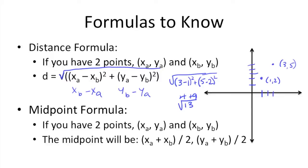Next up, we have the midpoint formula. If you have two points, (xa, ya) and (xb, yb), the midpoint will be (xa plus xb) divided by 2, (ya plus yb) divided by 2.